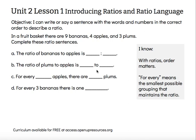Letter A says: the ratio of bananas to apples is blank to blank. I have nine bananas and four apples, so I write bananas first followed by apples — nine to four. The ratio of bananas to apples is nine to four, meaning there are nine bananas and four apples.